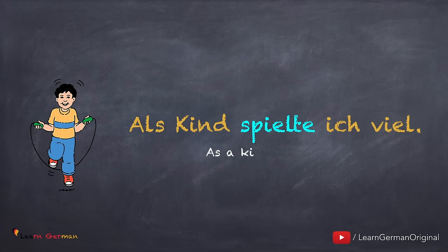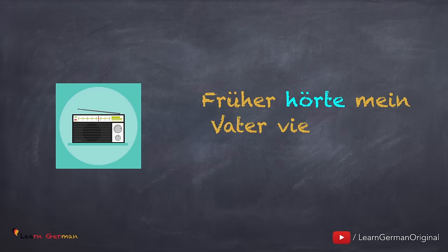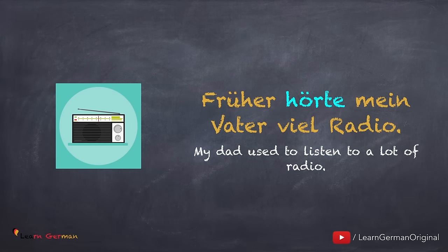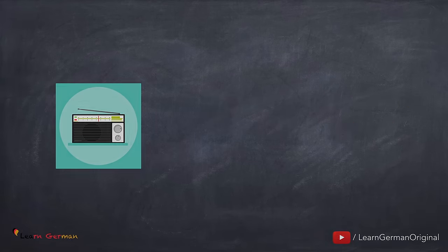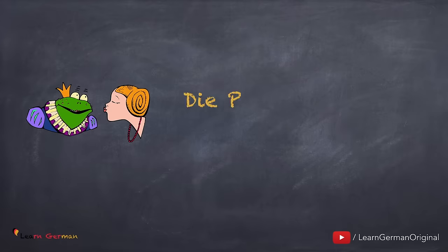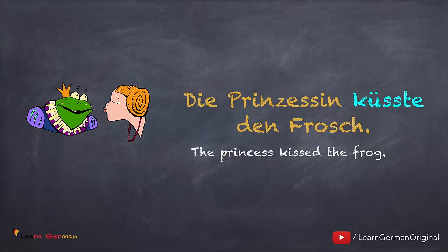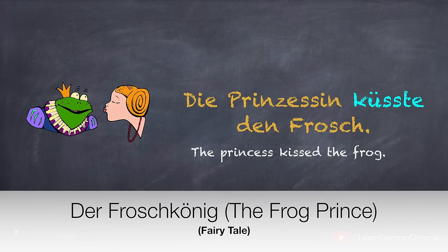Hier ein paar Beispiele. Als Kind spielte ich viel. Früher hörte mein Vater viel Radio. Die Prinzessin küsste den Frosch. Dieser Satz ist aus dem Märchen Froschkönig.